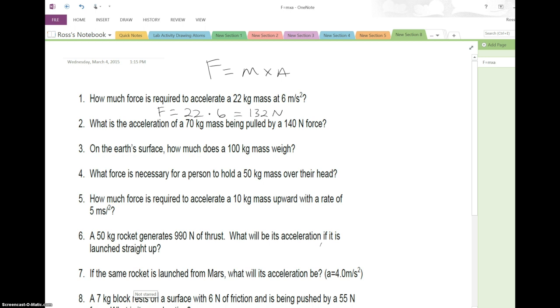What is the acceleration of a 70 kilogram mass being pulled by 140 Newton force? In this problem you've got the force and you've got the mass; we're solving for the acceleration. So 140 equals 70 times A. Divide both sides by 70, and we are left with A equals 2 meters per second squared.